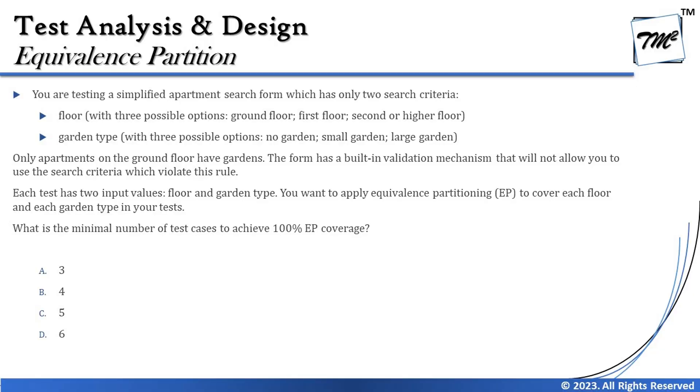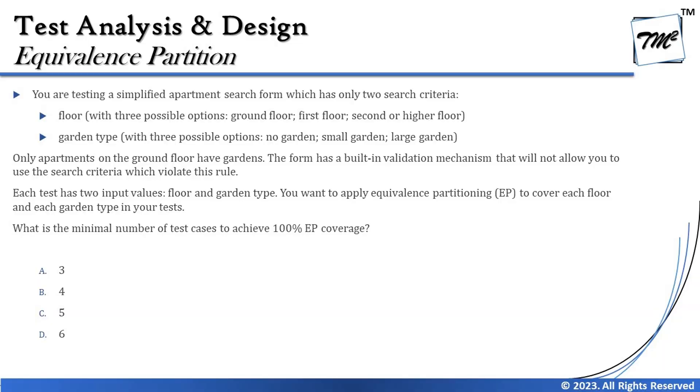The form has a built-in validation mechanism that will not allow you to select a garden type that violates this rule. The moment you select the first floor or any higher floor, you will not have an option to select the garden type at all. So we don't need to consider those combinations as part of our test case creation.